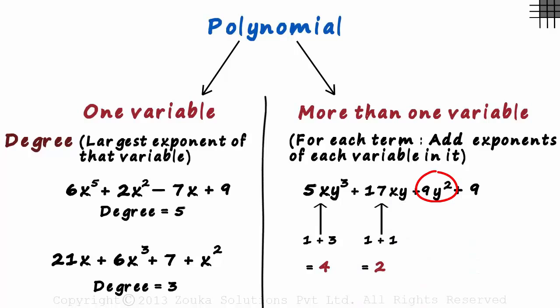In the third term, we have just one variable. Its exponent will just be 2. And as we have no variables in the last term, its exponent will be 0.